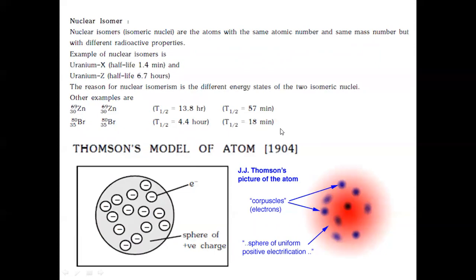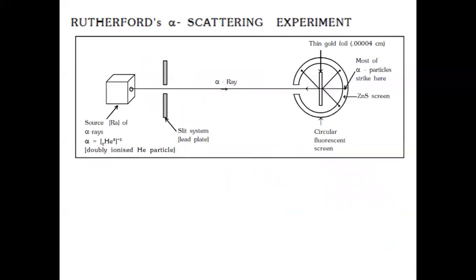Different atomic models: the first is Thomson's atomic model, which explains the electrical neutrality of an atom. The second model is Rutherford's alpha scattering experiment, from which Rutherford gave postulates, observations, and results. From this experiment we learn that an atom consists of a small region at the center called the nucleus.